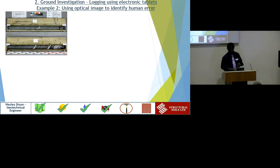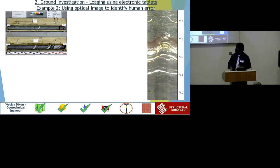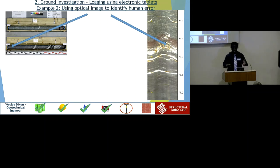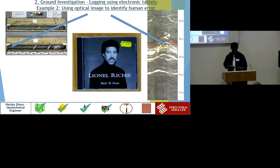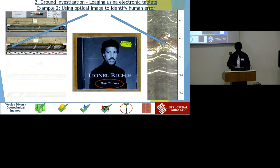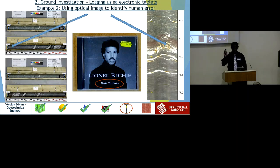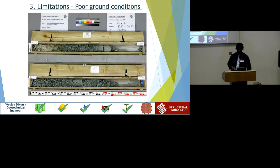Here's another example of using televiewer images. We've got more core and get the televiewer image up. At 75.5 metres, we can see an obvious phyllite band with quartz - but hold on, in the physical core, we don't have that yet. When this originally happened, it confused me. Then I realised the driller had simply put the core in the box back to front.